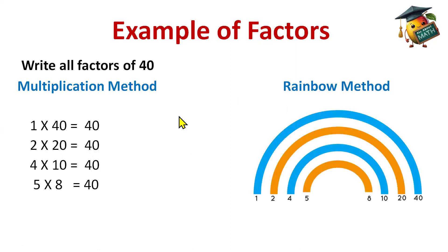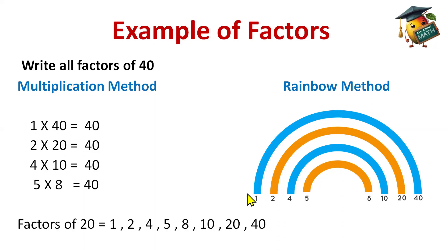Now for the rainbow method, we write the multiplicand and multiplier: 1 × 40 = 40, 2 × 20 = 40, 4 × 10 = 40, 5 × 8 = 40. So we have written the factors of 40: 1, 2, 4, 5, 8, 10, 20, and 40.